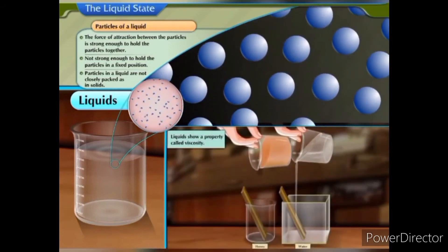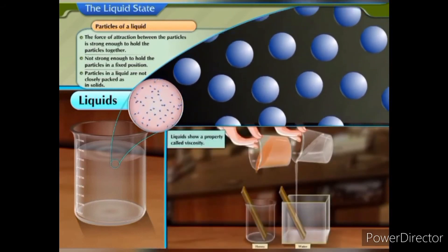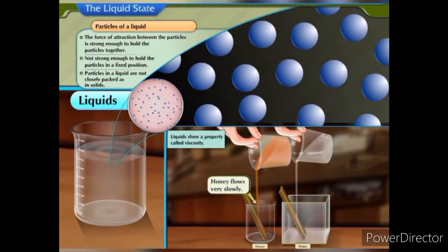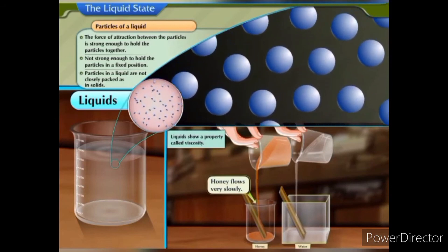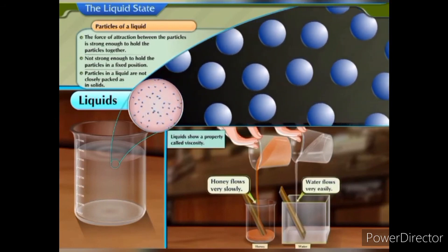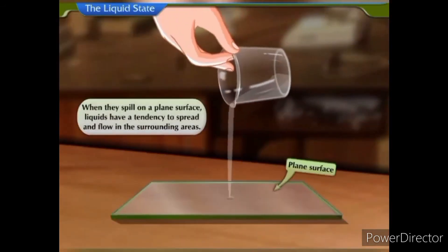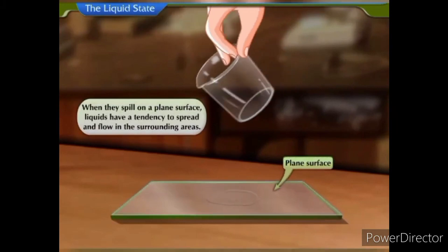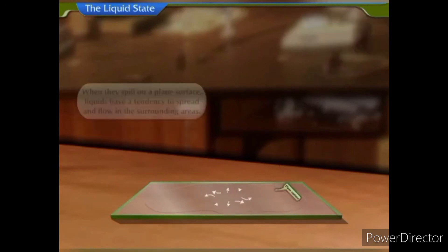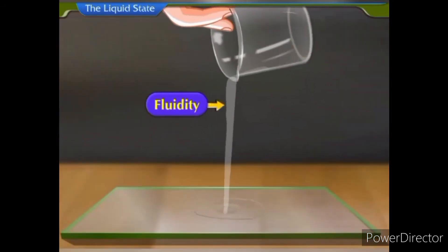Liquids show a property called viscosity. More viscous liquids flow slowly, while less viscous liquids flow easily. When they spill on a plain surface, liquids have a tendency to spread and flow in the surrounding areas. This property is called fluidity.